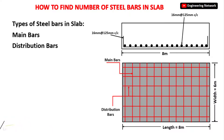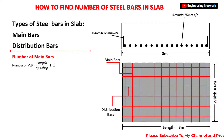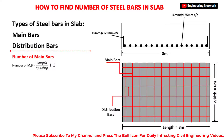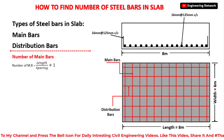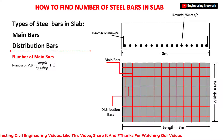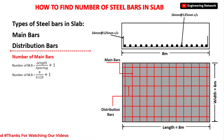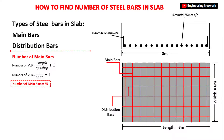Now I will find the number of main bars and distribution bars for this slab. The formula is: number of main bars = length of slab divided by spacing, plus 1. Here the length of slab is 8 meters and spacing is 125 millimeters, which is equal to 0.125 meters. After putting these values in the formula and doing the simple calculation, I get the total number of main bars which is equal to 65.